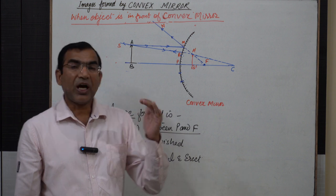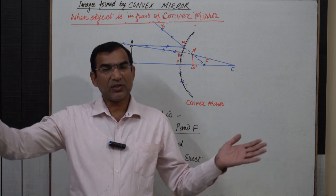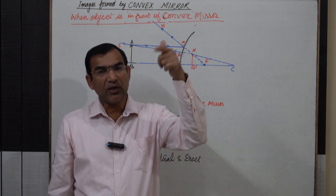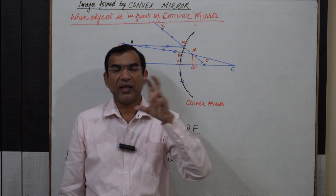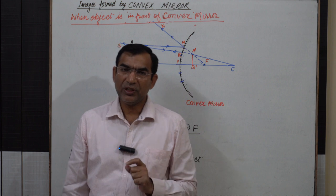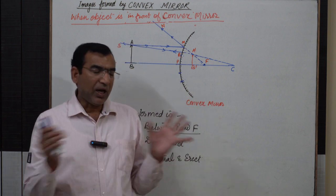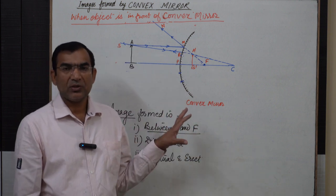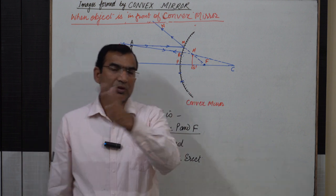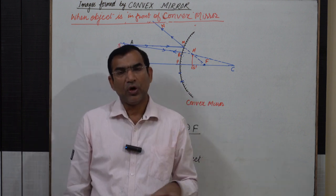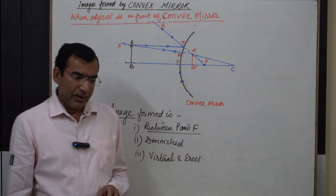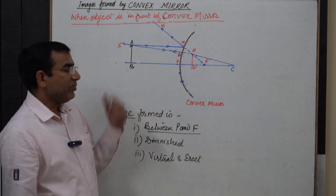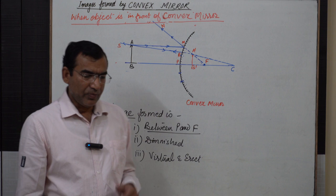Another use of convex mirrors is at strategic points like sharp turns. Large-size convex mirrors are placed at sharp turns so that the image of a motor vehicle coming from the other side can be seen. Also, large-size convex mirrors are used on shop counters to get a wide view of the counter. These are the major uses of convex mirror.